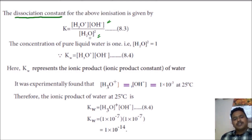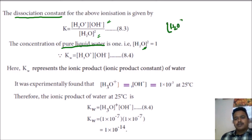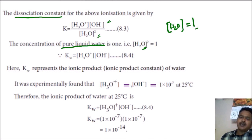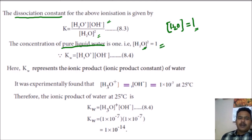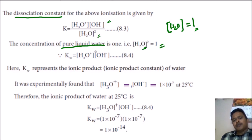Now, H2O is a pure liquid. For pure liquids, the concentration is considered as one. So [H2O] × [H2O] equals one. Therefore, K simplifies: it becomes KW, and KW equals the concentration of hydronium ion times the concentration of OH− ion.